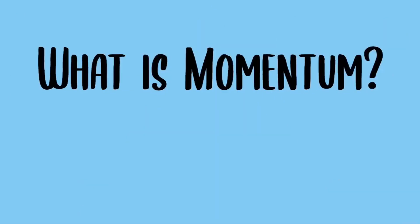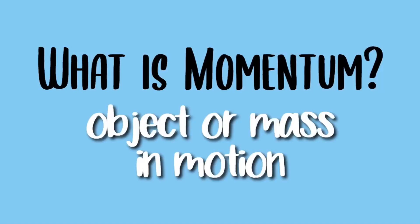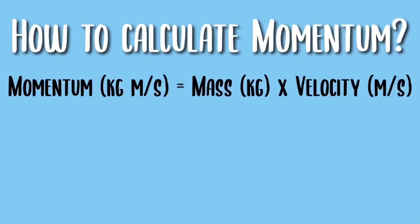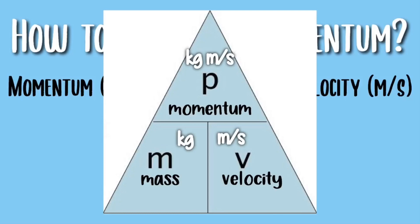Now let's move on to momentum. What is momentum? Momentum is an object or a mass in motion. To calculate momentum, you would need to multiply the mass and the velocity. Here is the triangle formula for momentum.